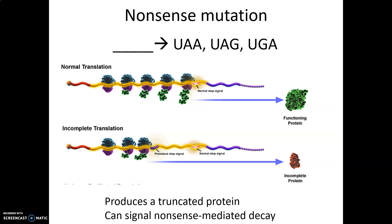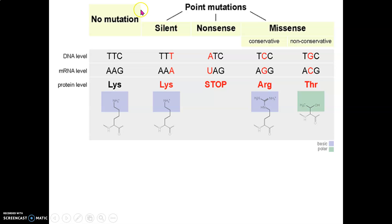The consequences of a nonsense mutation depend on how much is truncated. We might produce a protein that's fine if only one codon is lost, or produce half-sized protein with a gain-of-function effect, or produce no protein at all if nonsense-mediated decay kicks in. To recap: a silent mutation changes the sequence but not the amino acid. A nonsense mutation introduces a stop codon. A missense mutation is conservative — changing to an amino acid with similar properties — or non-conservative, changing to an amino acid with different properties.